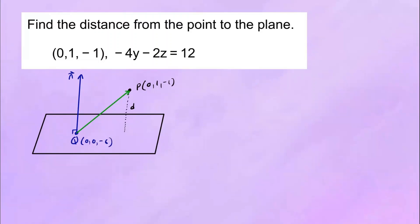Now how do we find the vector QP? Well, the vector Q to P is found by subtracting its components: 0 minus 0 is 0; 1 minus 0 is 1; negative 1 minus negative 6 is 5. So the vector QP is (0, 1, 5).